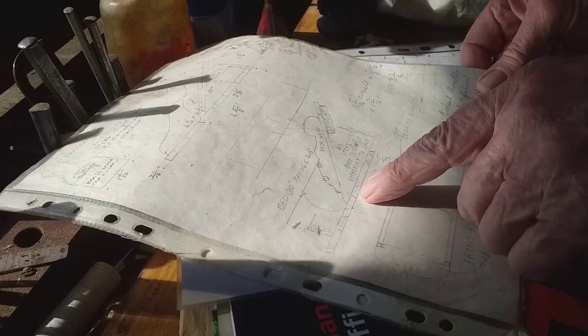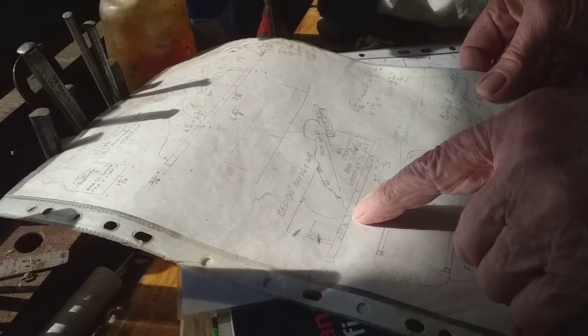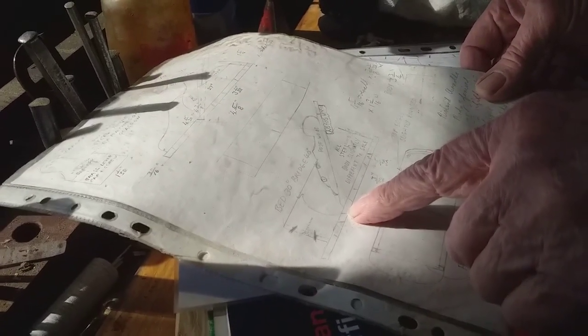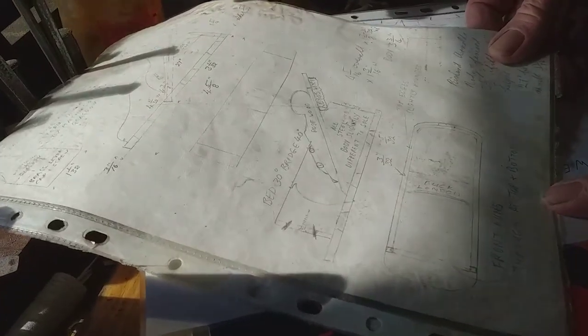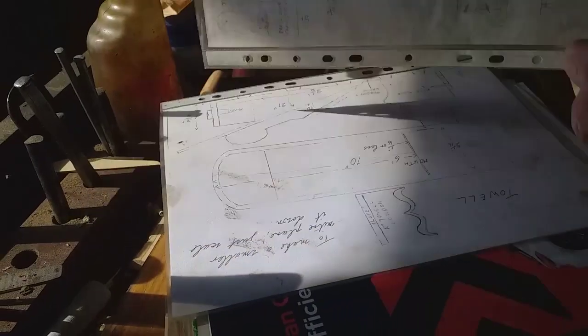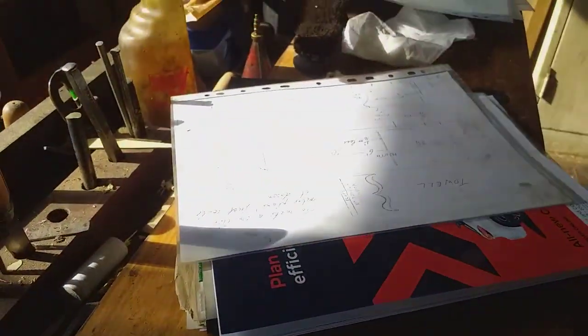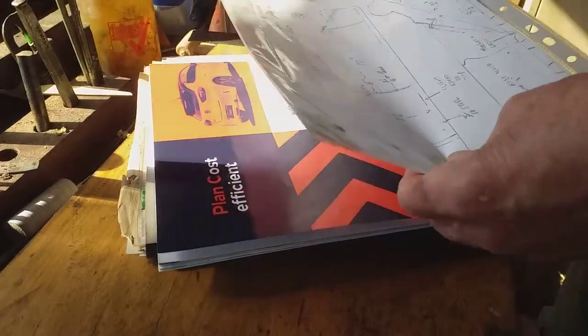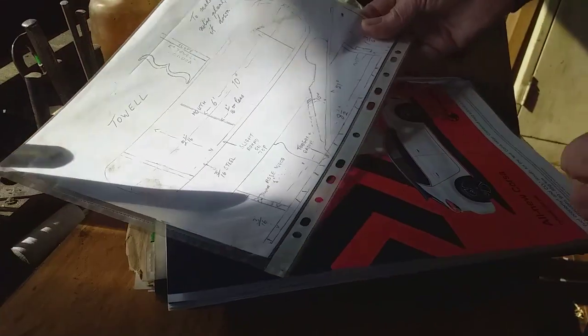This one's only got three dovetails so it's got a tongue and groove joint there. A very small plane for a mitre plane. Right, who's this one by?